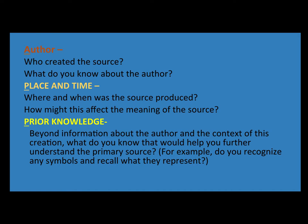A is for author — who created the source? What do you know about the author? P is for place and time — where and when was the source produced, and how might this affect the meaning of the source?